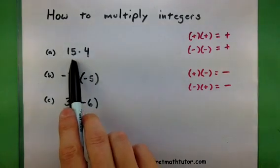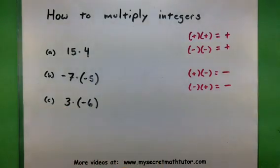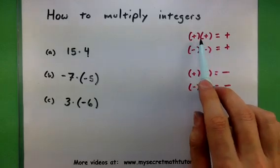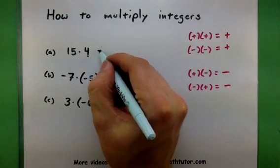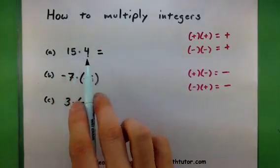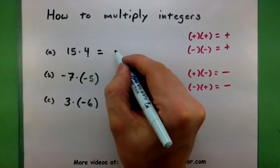Okay, so in my first example, I have 15 times 4. Notice how they are both positive. This means my answer will also be positive. So the way I handle this is I take 15 times 4, and I get my answer of 60.